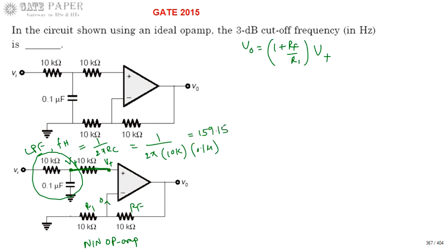This will be equal to 159.15 hertz. So the right answer for this question, that is 3dB cutoff frequency, is 159.15 hertz.